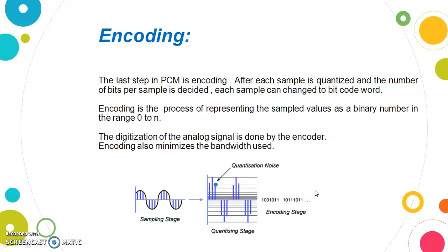Using these steps we can perform Pulse Code Modulation to convert our analog signal or analog waveform to digital or discrete signals. In our next video we will talk about Delta Modulation, which is also a type of analog to digital conversion. Thank you so much.